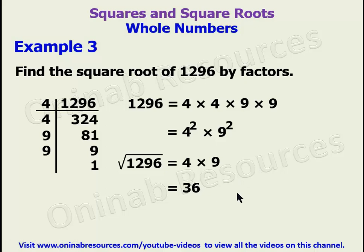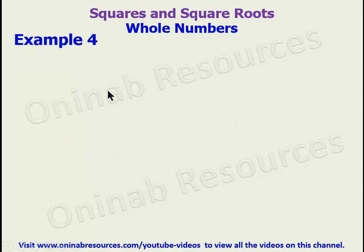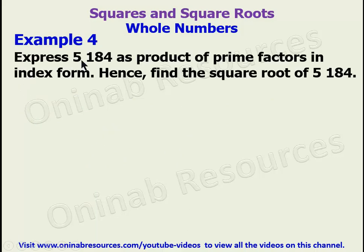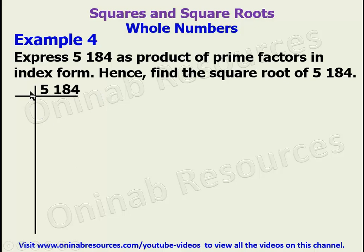We go to Example 4: express 5184 as a product of prime factors in index form, hence find the square root of 5184. In this problem it is mandatory to express 5184 as a product of prime factors as the question demands. Two can divide 5184, so we go with 2. 5184 divided by 2 gives 2592; 2592 divided by 2 gives 1296; 1296 divided by 2 gives 648.